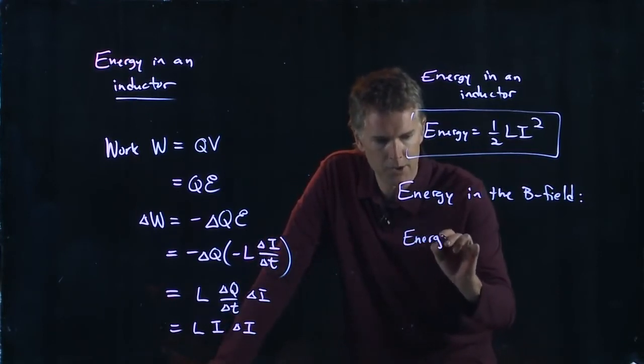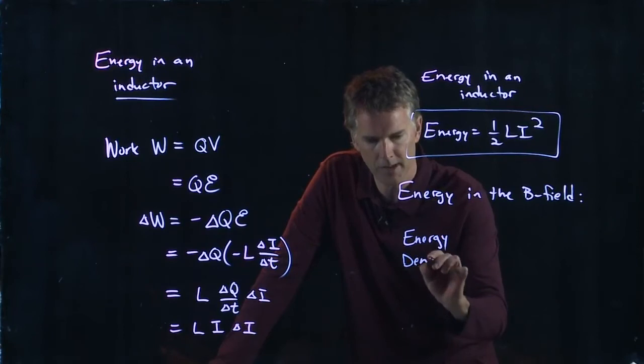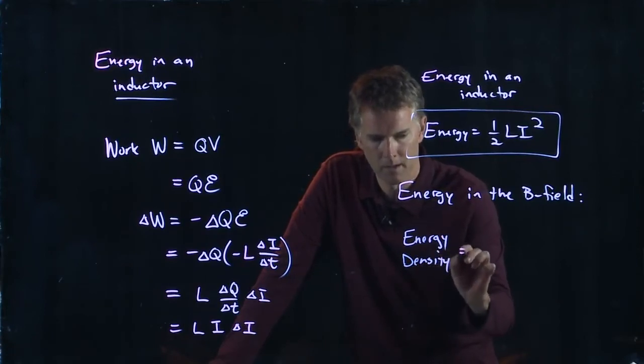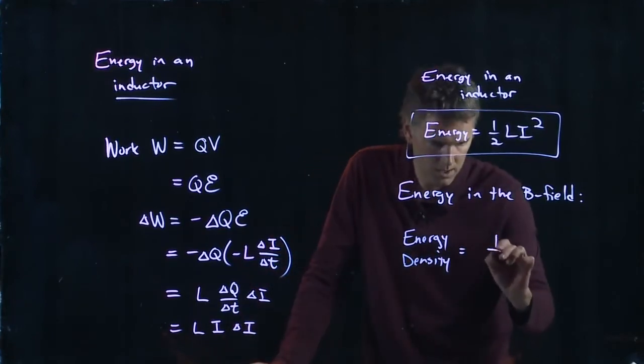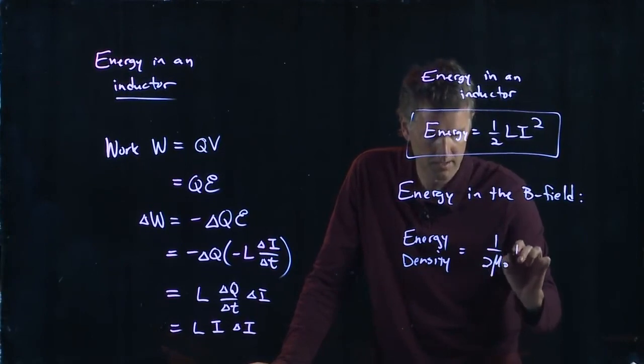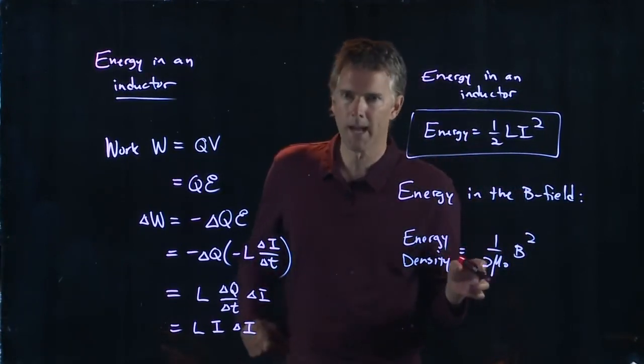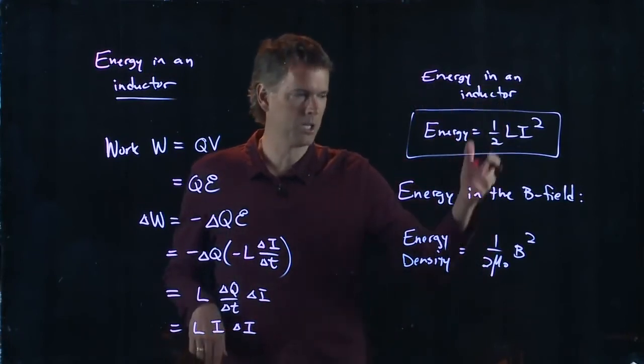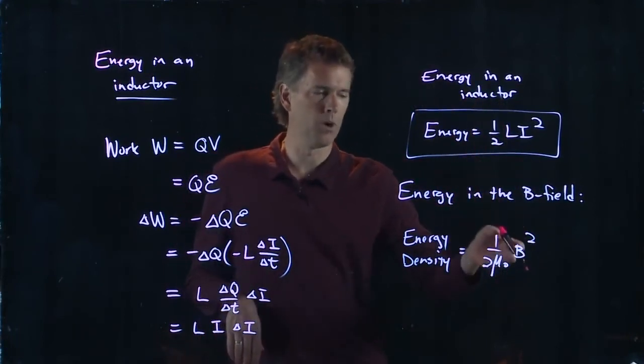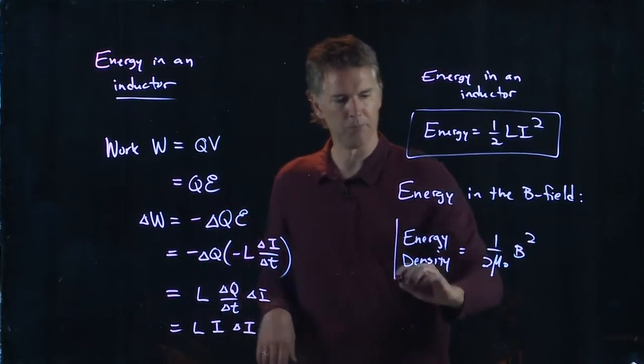And we're going to write down the energy density, which is energy per volume. And it is 1 over 2 mu naught B squared. Remember for the electric field, we had one-half with an epsilon naught times E squared. Now we've got 1 over 2 mu naught times B squared.